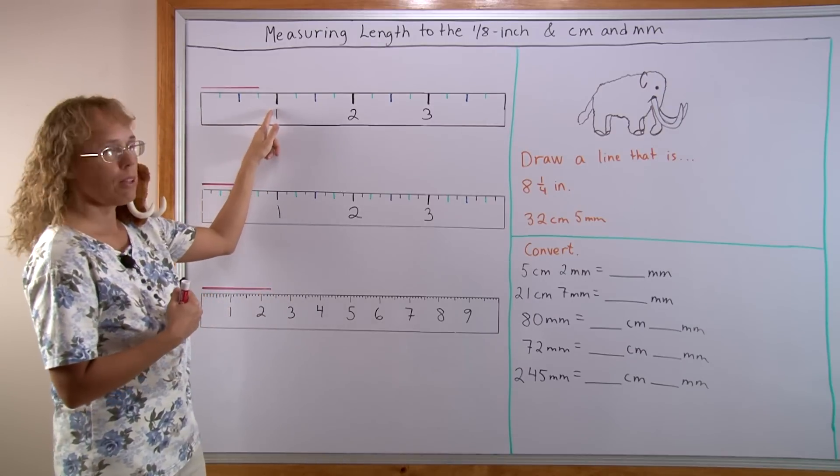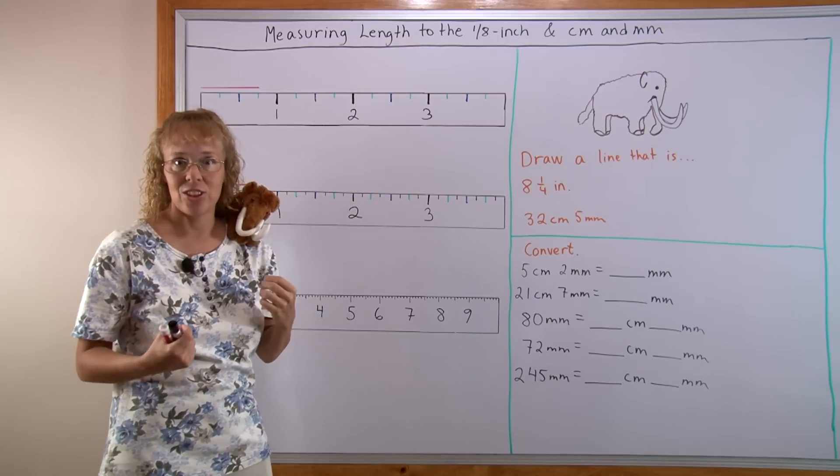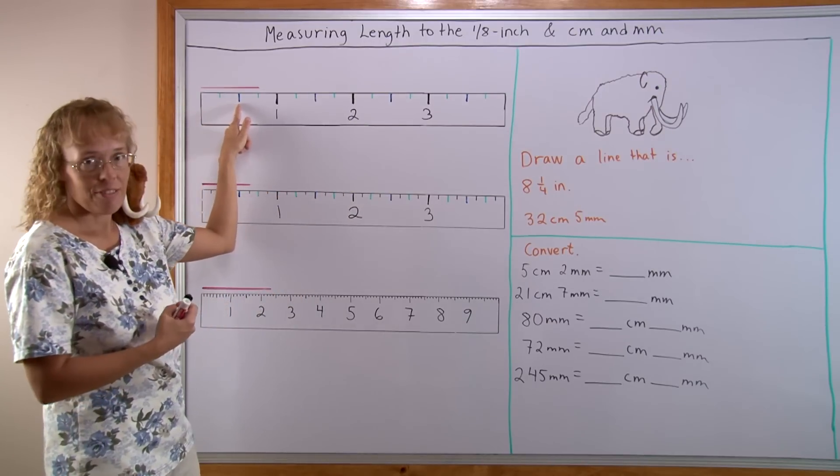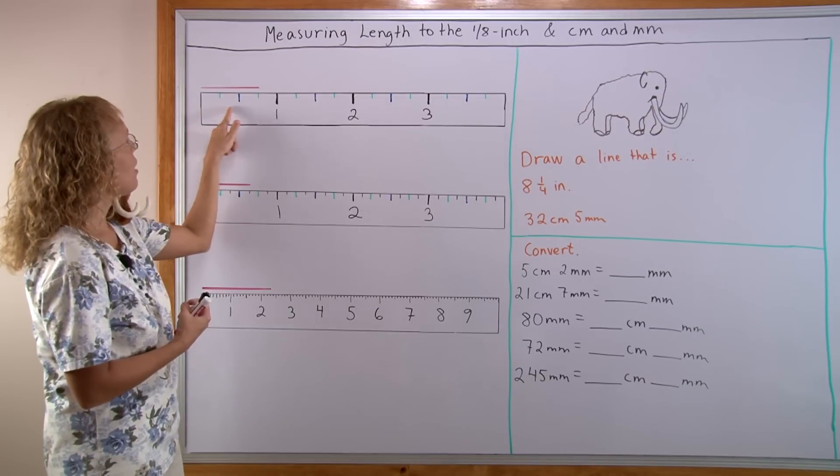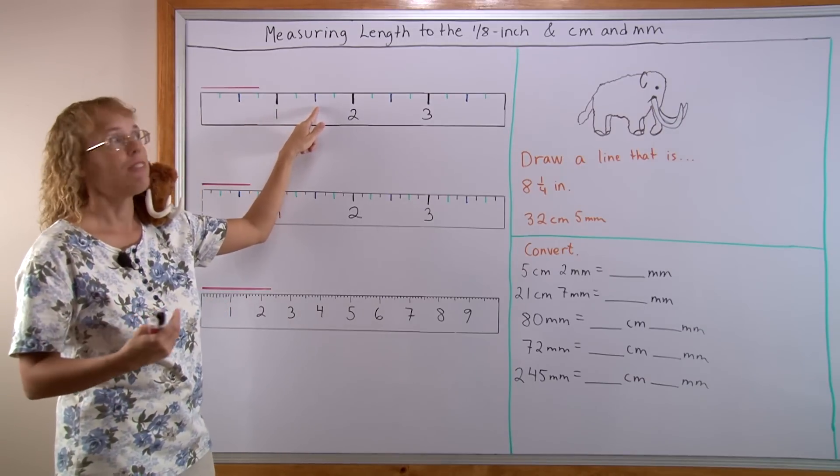From here to here would be one whole inch and the blue marks signify the 1/2 inch marks. So from here to here is 1/2 inch. Then from here all the way to here is 1 1/2 inches, right?